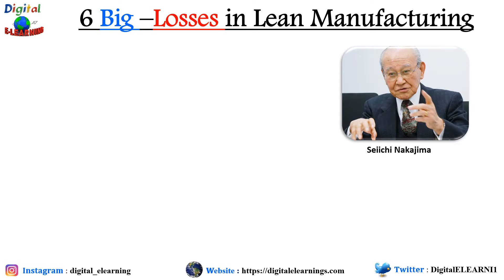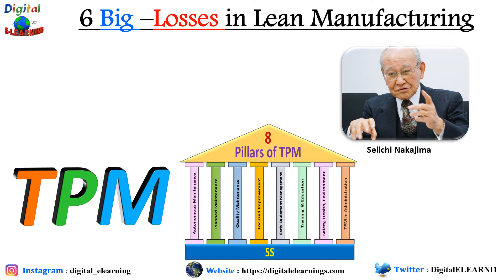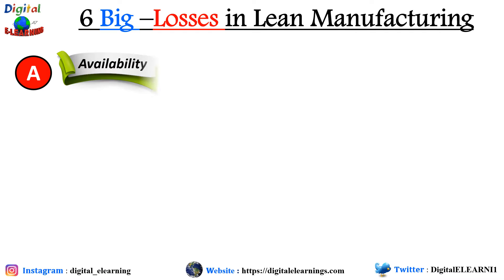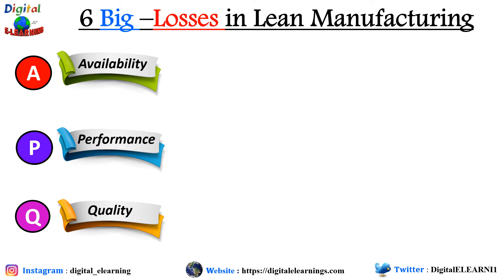The concept of six big losses was given by Seiichi Nakajima. The six big losses evolved from TPM — Total Productive Maintenance. There is a detailed video on this topic on my channel. All OEE factors — availability, performance, and quality — should be broken down further so that all losses can be analyzed, prioritized, and minimized. When we talk about the six big losses in lean manufacturing, they each impact either availability, performance, or quality.